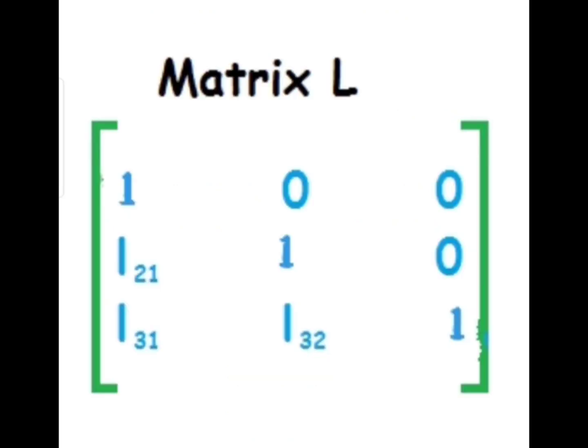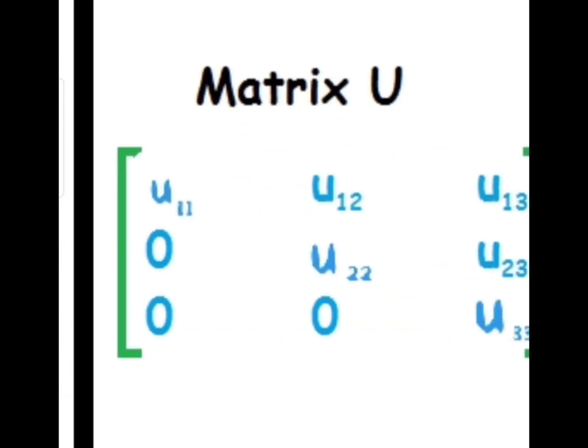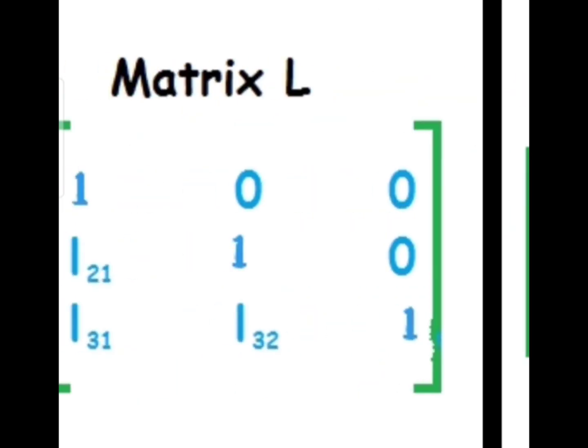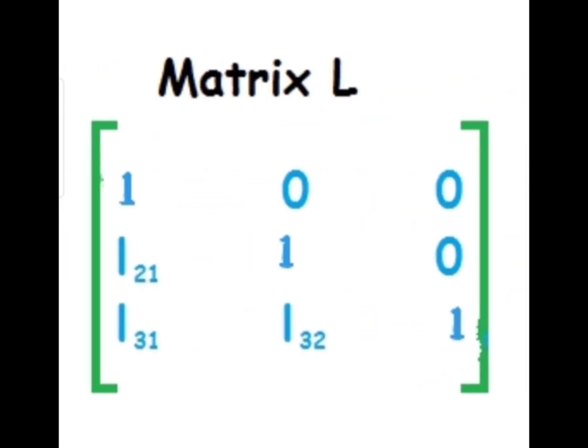Now, regarding the formation of matrices L and U: in the Doolittle method, we have a unit lower triangular matrix L — that is, the diagonal entries are 1 — and an upper triangular matrix U, as you can see on the screen. Whereas in the Kraut method, we have a unit upper triangular matrix U and a lower triangular matrix L.